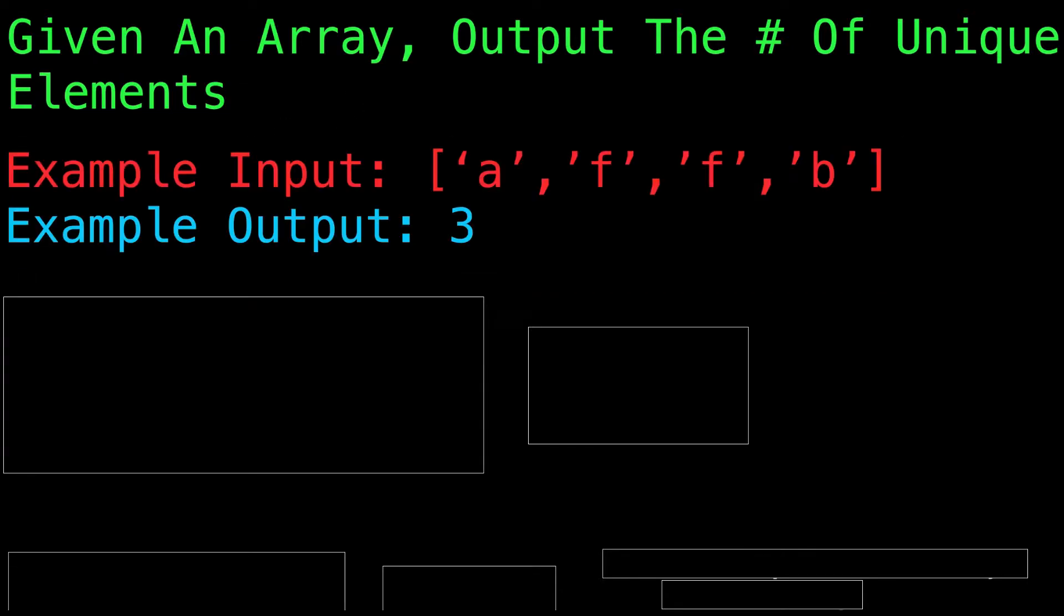Let's take a look at our example. You can see that we have A, F, F, and B in our array. The amount of unique elements here would be A, F, and B. We don't count this F because we already have another F, so we would want to output 3.